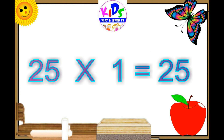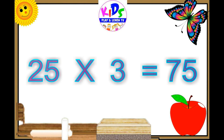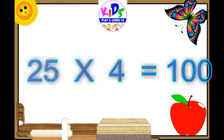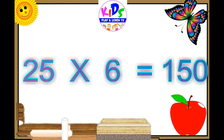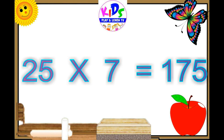25 ones are 25, 25 twos are 50, 25 threes are 75, 25 fours are 100, 25 fives are 125, 25 sixes are 150, 25 sevens are 175.